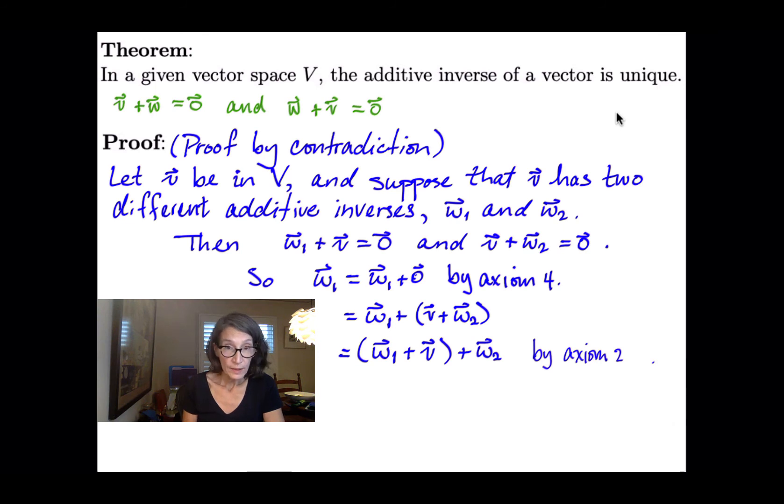Well, by assumption, w1 plus v is just the additive identity element, or the zero vector. So we have w1 is really just the zero vector plus w2. But this is just w2, again, by axiom 4.